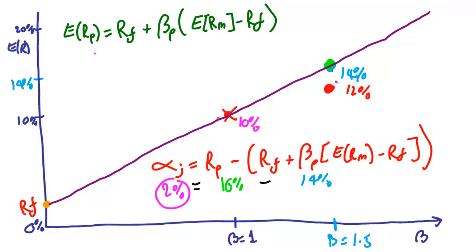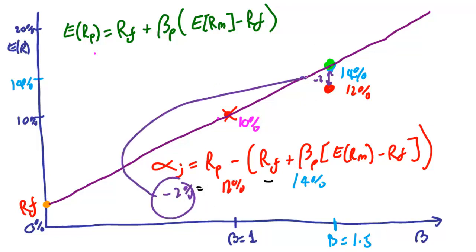If the actual return is now 12%, 2% below what it should be, you'd short the stock. You've now got a negative alpha of minus 2%. You sell this for a high price because it's overpriced, probably. Then when the price comes down, you buy it back at that lower level to cover yourself off.